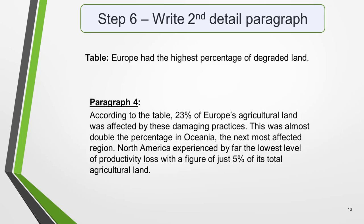For the fourth and final paragraph, you do the same thing for your second key feature: Europe had the highest percentage of degraded land. According to the table, 23% of Europe's agricultural land was affected by these damaging practices. This was almost double the percentage in Oceania, the next most affected region. North America experienced by far the lowest level of productivity loss, with a figure of just 5% of its total agricultural land.